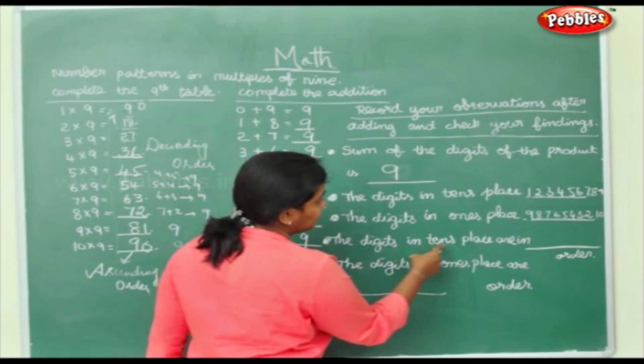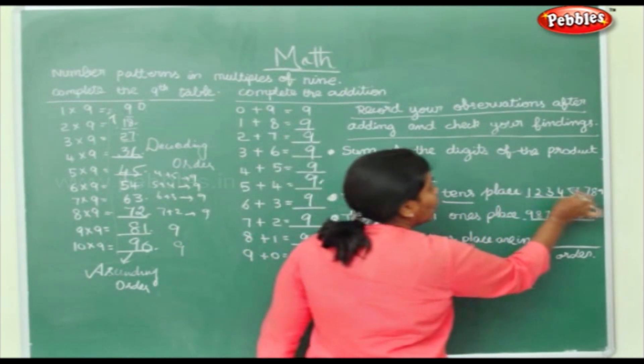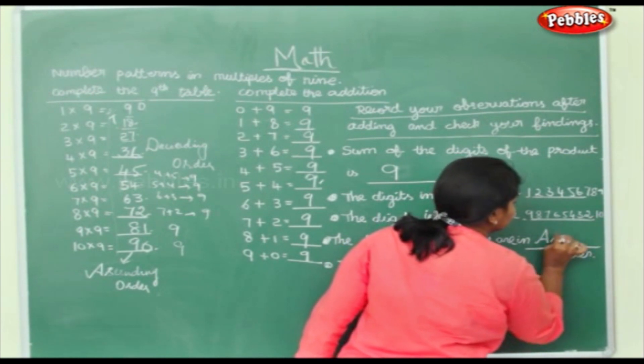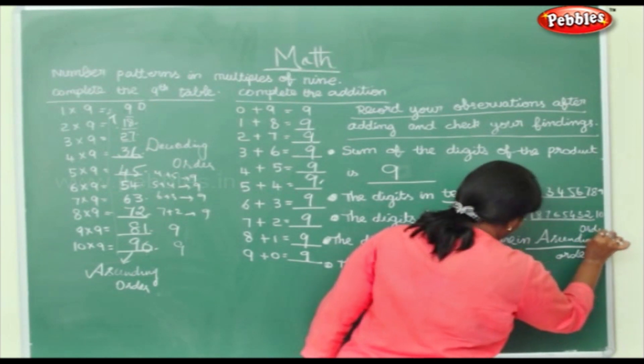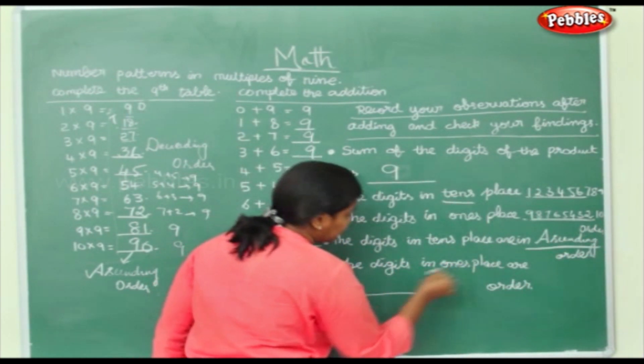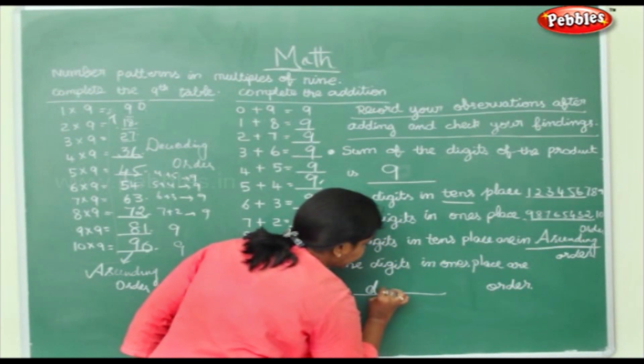The digits in the 10th place are in what order is this? From small to big, so ascending order. The digits in the 10th place are descending order. The digits in the 1's place are descending order from big to small, so it is descending order.